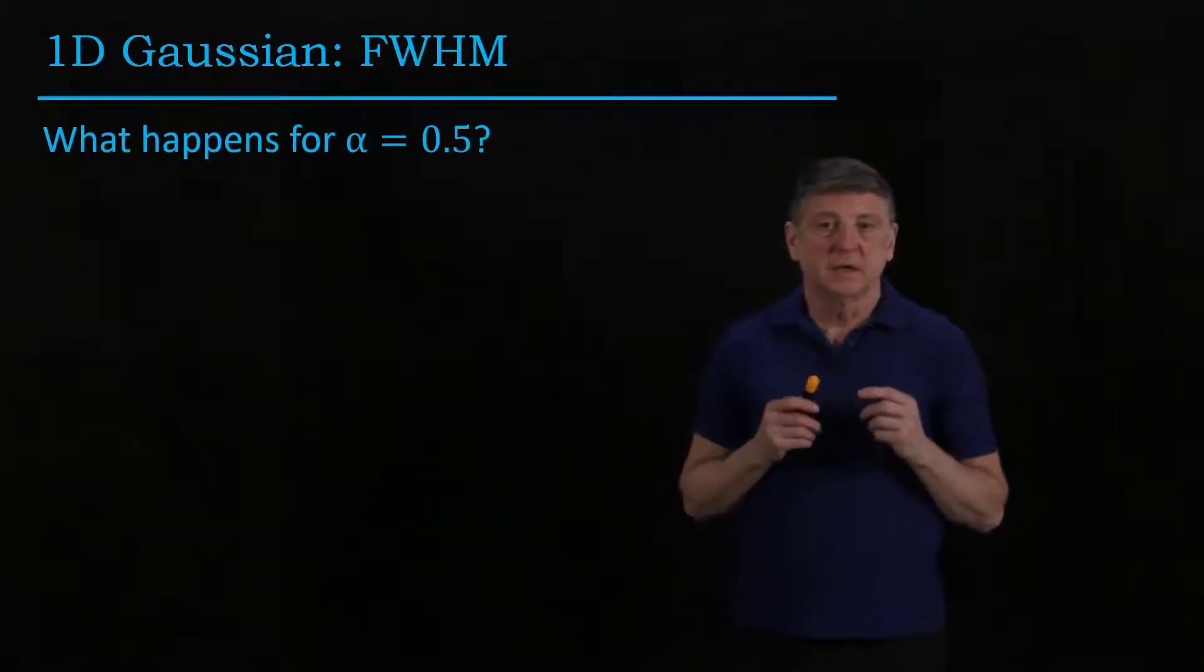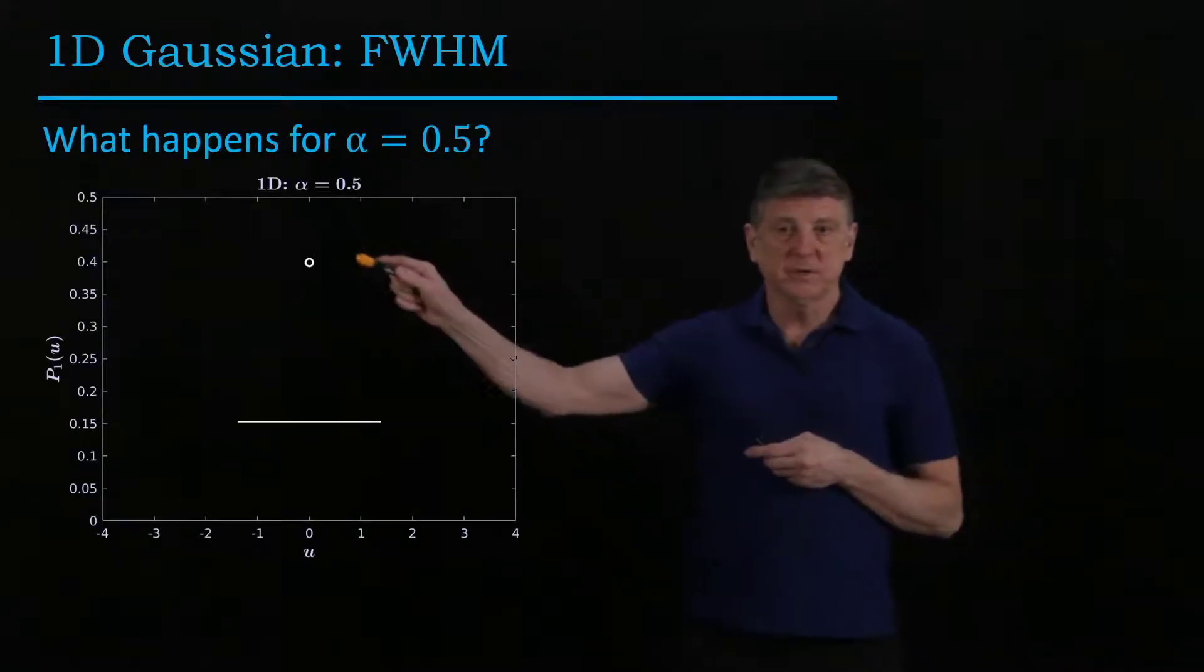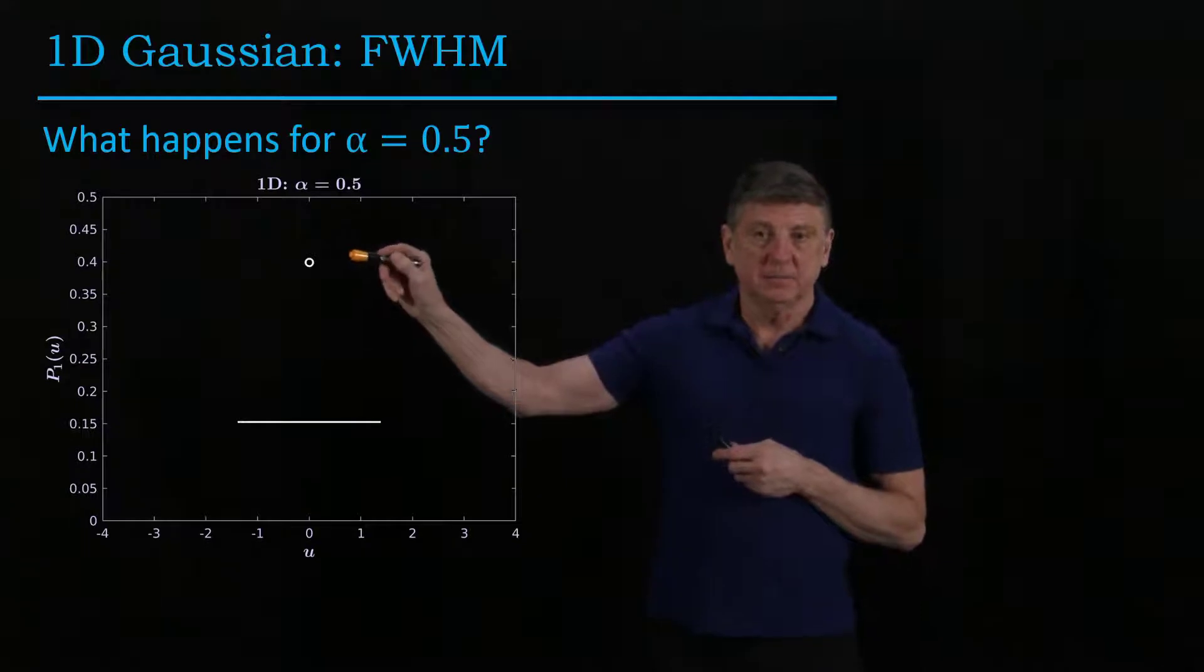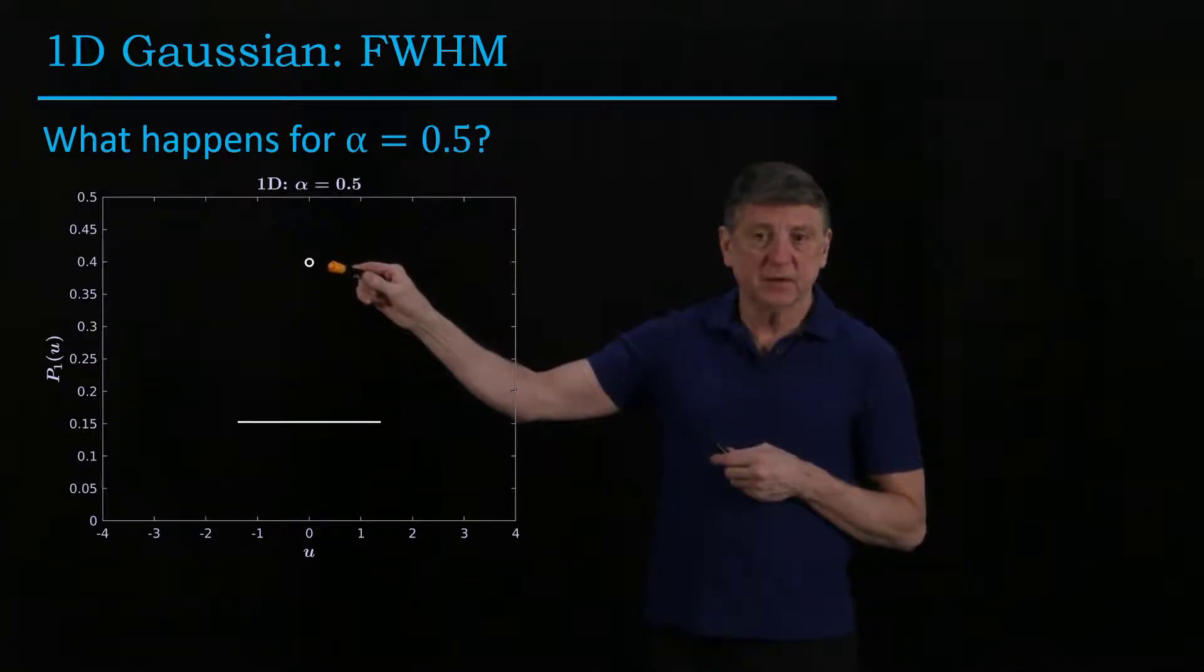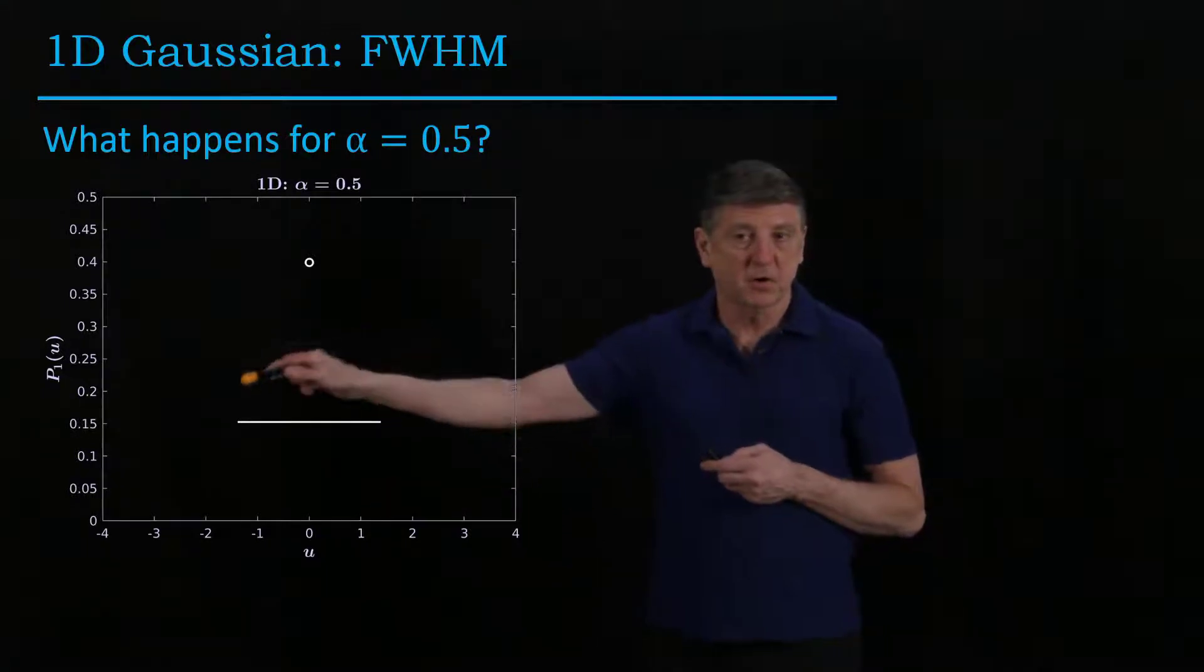And the question is, what happens for alpha of 0.5? Well, what we do is we take the zero value, and then we work out the z alpha. So we go out that far on each side.